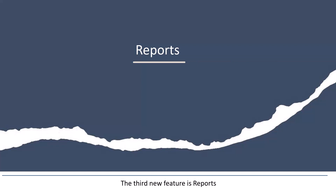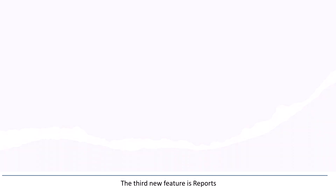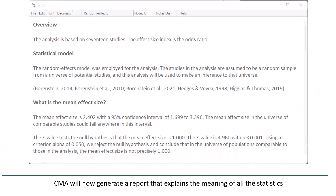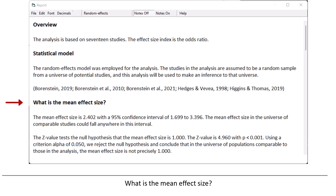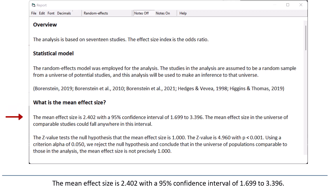The third new feature is reports. CMA will now generate a report that explains the meaning of all the statistics. In this analysis, the report reads in part: the mean effect size is 2.402, with a 95% confidence interval of 1.699 to 3.396.